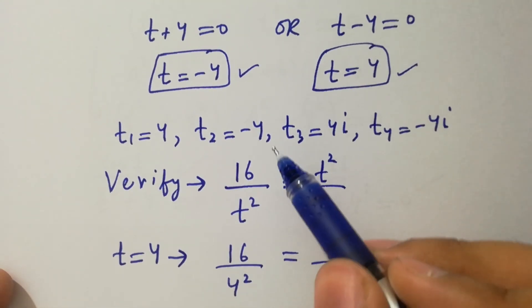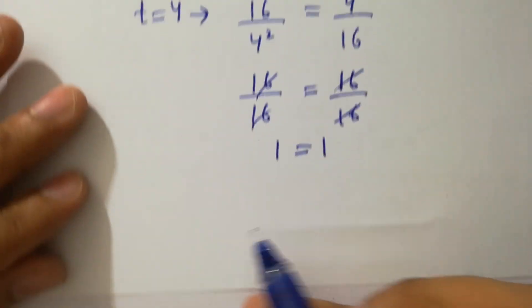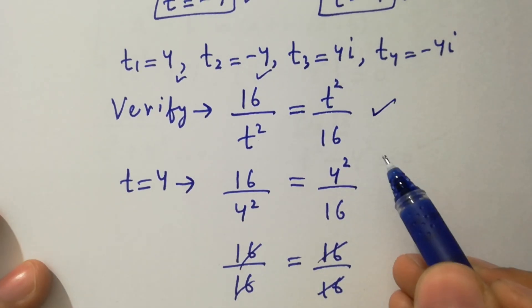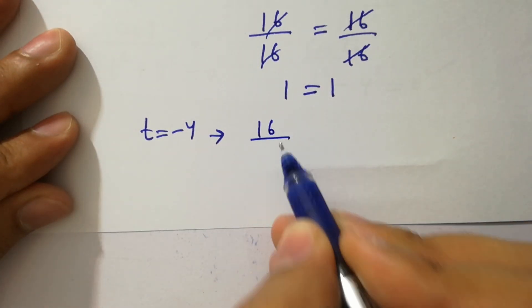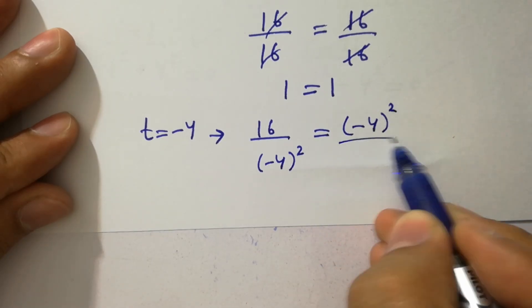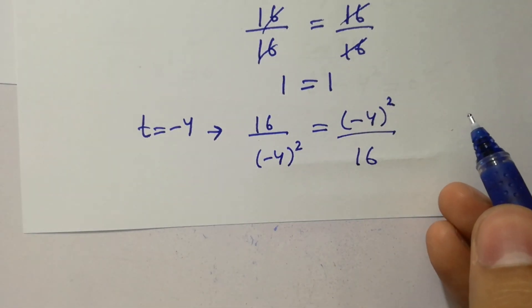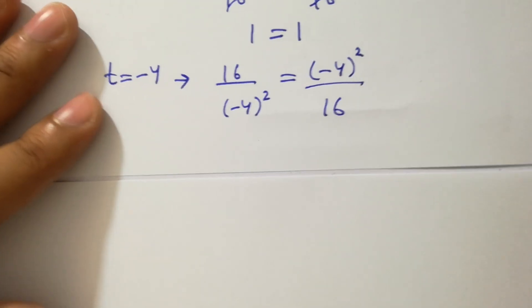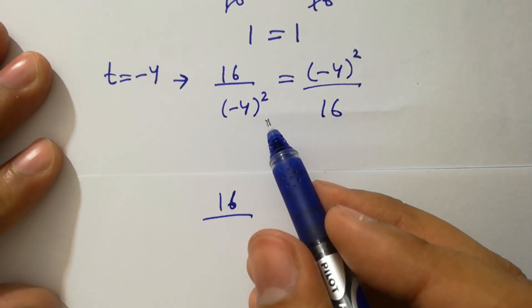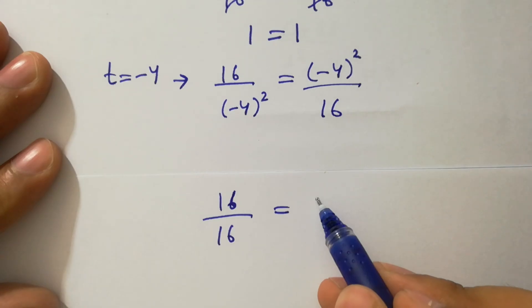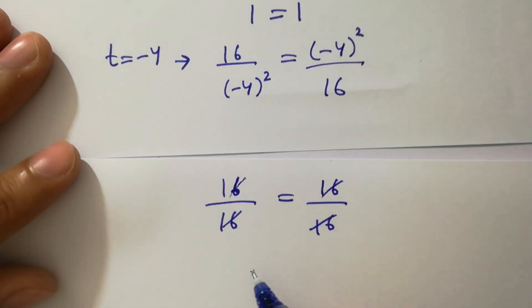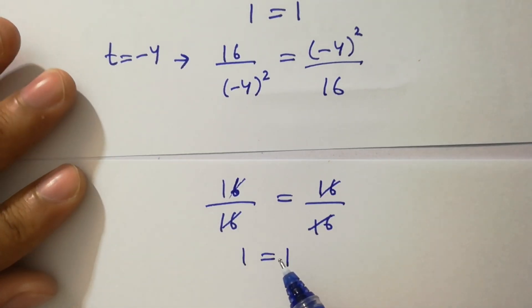Now take t equals minus 4 and put into the equation. We have 16 over minus 4 squared equal to minus 4 squared over 16. Since minus 4 squared equals plus 16, we have 16 over 16 equal to 16 over 16. The 16s cancel and we have 1 equal to 1, so left hand side equals right hand side.